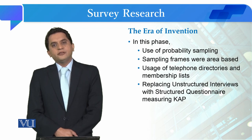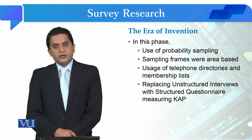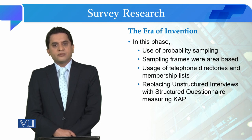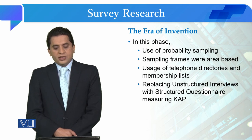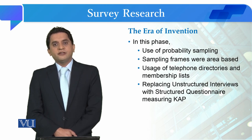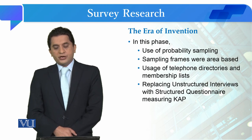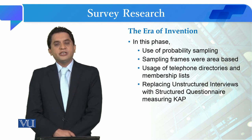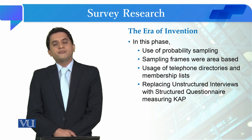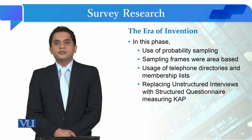During the era of invention, survey research developed proper probability sampling. Area-based sampling used telephone directories or membership lists of community members. The survey research tool changed from unstructured interviews to the structured questionnaire, which measured knowledge, attitudes, and practices of community members.